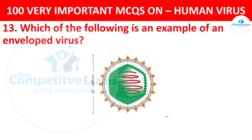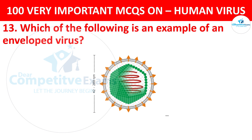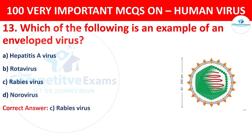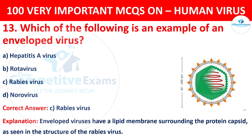Question 13. Which of the following is an example of an enveloped virus? The options are Hepatitis A virus, rotavirus, rabies virus, or norovirus. The correct answer is C, that is rabies virus. Enveloped viruses have a lipid membrane surrounding the protein capsid, as seen in the structure of the rabies virus.